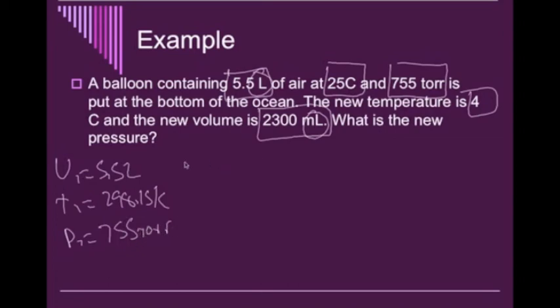Now, we need our V2, which our V2 is 2,300 milliliters, which to get it to liters all we have to do is move the decimal place three times, and we get 2.3 liters. So now they're in the same unit, we can work with them. And it gives us a T2 of, we add 4 to 273.15, and we get 277.15 Kelvin. And we are searching for the new pressure, or P2.